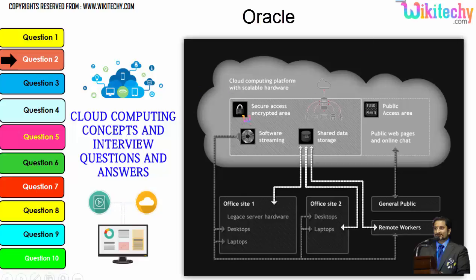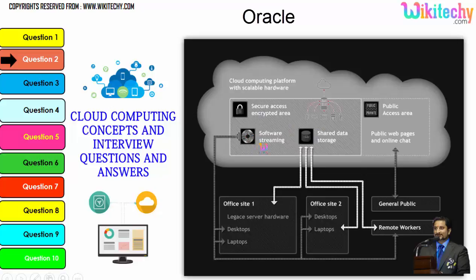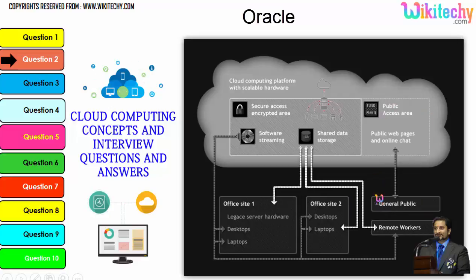Cloud computing has a public access area with public web pages for end users, and also secure data access for security purposes. Companies can use it as a private kind of cloud, and the public can use it to access web pages and websites. This is how cloud computing works.